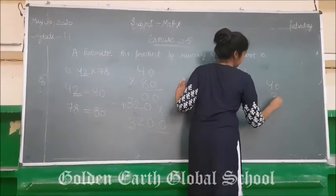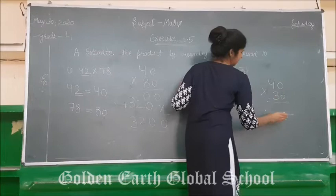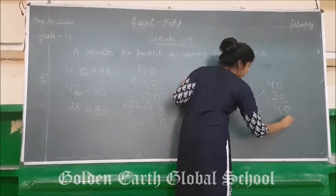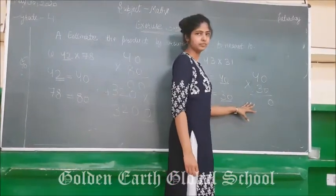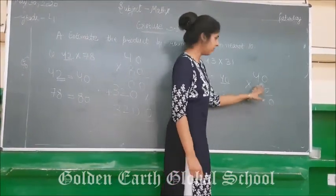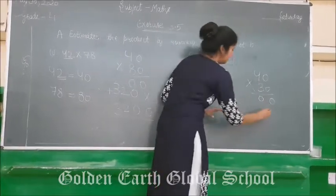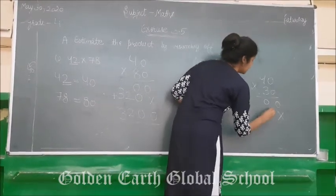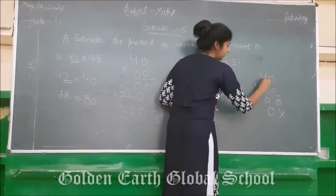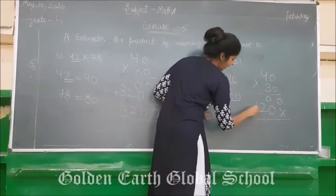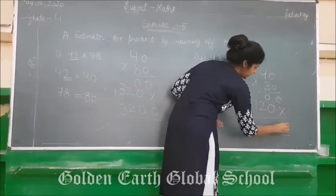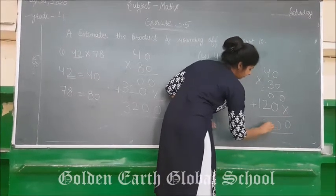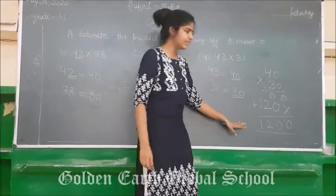Starting the multiplication of 40 × 30: 0 multiplied by 0 is 0; 0 multiplied by 4 is 0 (not 4). Then 3 multiplied by 0 is 0; 3 multiplied by 4 is 12. Adding all the numbers: 0, 0, 2, 1. So our final answer is 1,200.